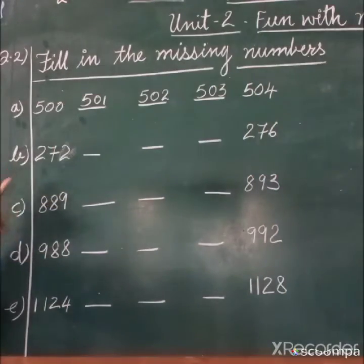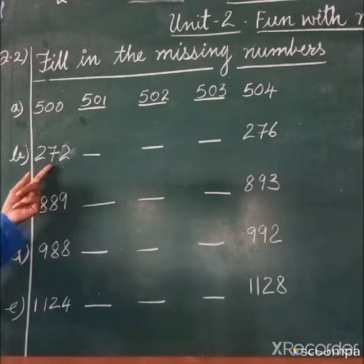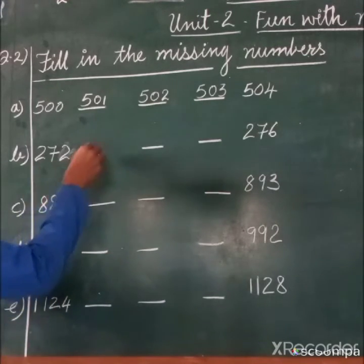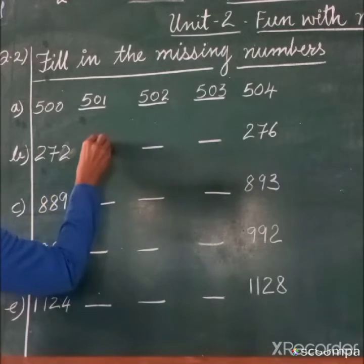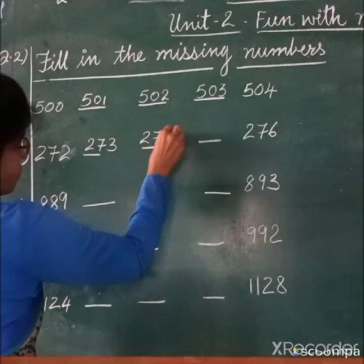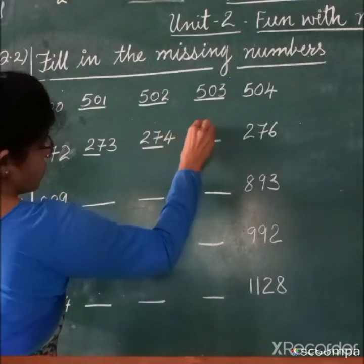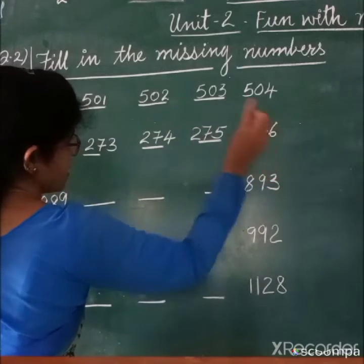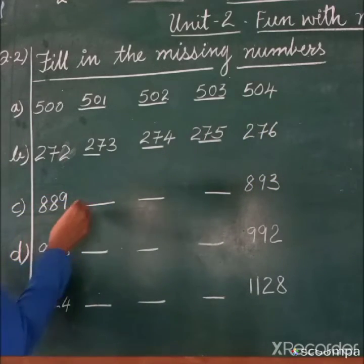Then question number B. 272. Which number will come? 272, after that 273, 274, 275, 276.